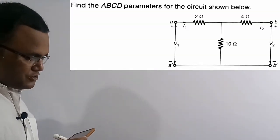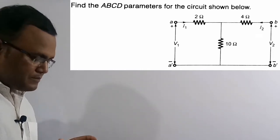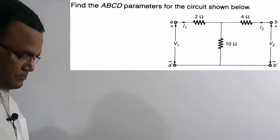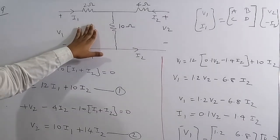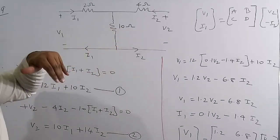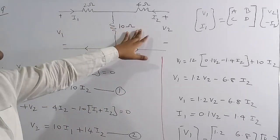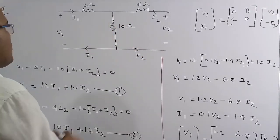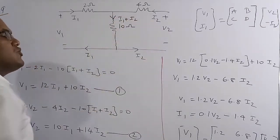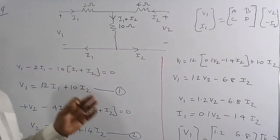Now the ninth question: find the ABCD parameters of the circuit shown — a star-connected pure resistive circuit. This question is from IES Mains 2006 for 10 marks. The circuit has current I1 entering port 1, current I2 at port 2, voltages V1 and V2. At the central node, the outgoing current is I1+I2.